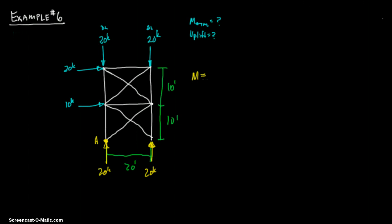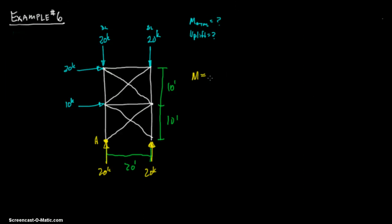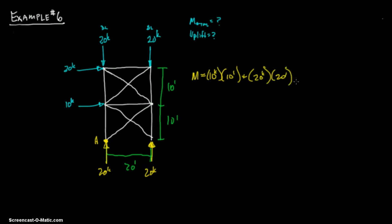So, 10 kips times 10 foot. And then we have 20 kips times 20 foot, which is going to be what, 400, 500 equals 500 foot kips. And that is your overturning moment.